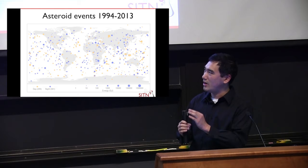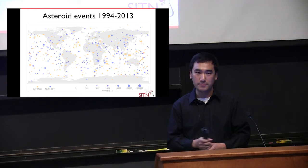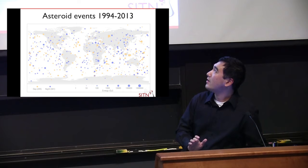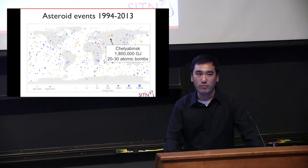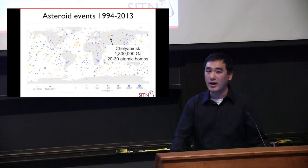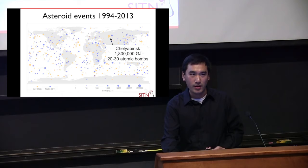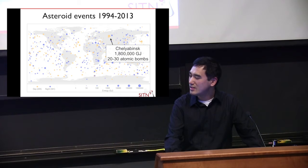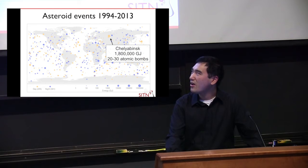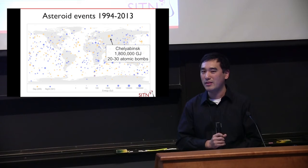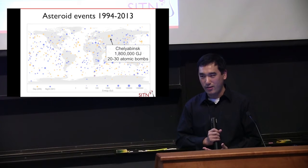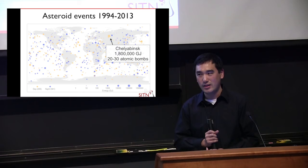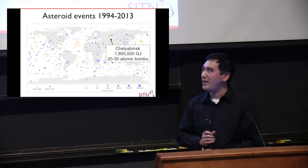The size of the dots on this map does not correspond to the actual size of the rock that was hitting the Earth — if we put the actual size, you would not be able to see them. The size actually corresponds to how much energy was released as it burned up in the atmosphere. One specifically I'll point out is a meteor that exploded over Chelyabinsk, Russia — some of you might remember the videos from dashboard and security cameras of this impact. That meteor, on the larger side of what's shown on this map, exploded with a force of about 20 to 30 atomic bombs.